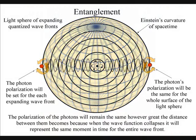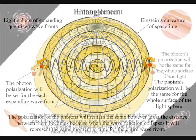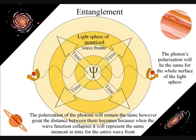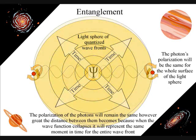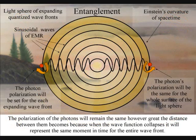We have entanglement, because the polarization will be set at the creation of each expanding wave-front. The wave-front will expand in the form of a light sphere, and the polarization will remain the same for the entire surface of the light sphere, no matter how large it becomes.